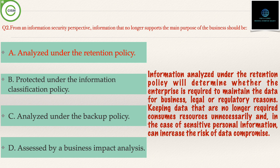Coming to Option B, protected under the information classification policy — this is incorrect, because whether information is protected under the information classification policy is an attribute that should be considered in the destruction and retention policy. Coming to Option C, analyzed under the backup policy — this is incorrect, because there is no reason to backup information that is no longer of use to the enterprise; it should be considered as part of the retention policy.